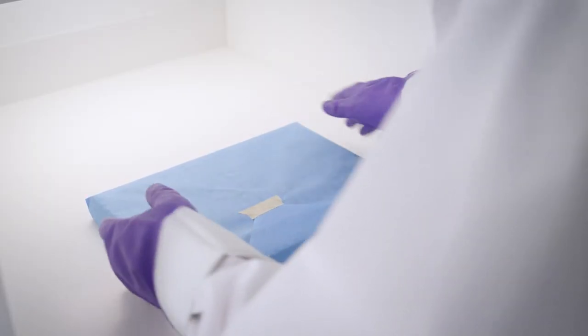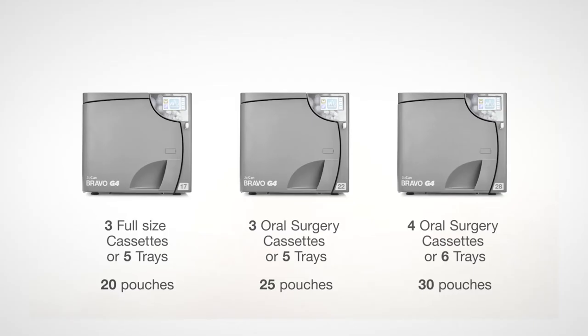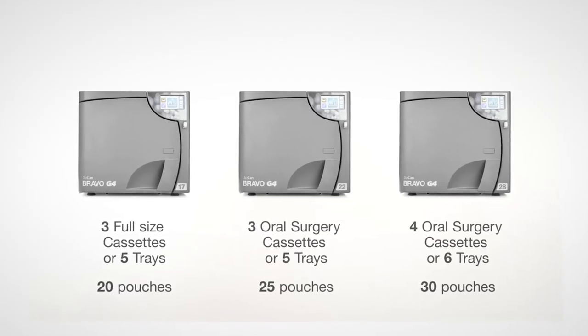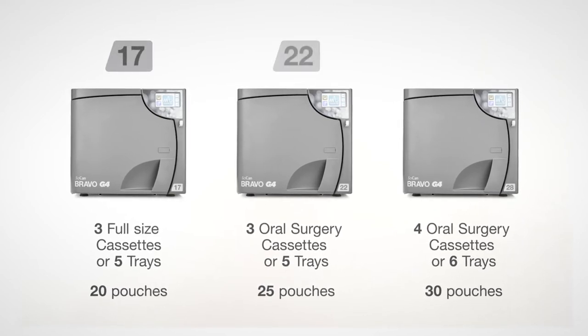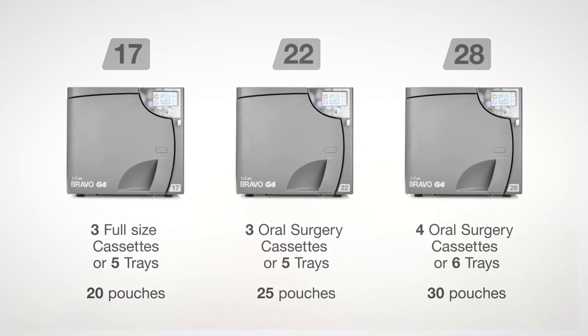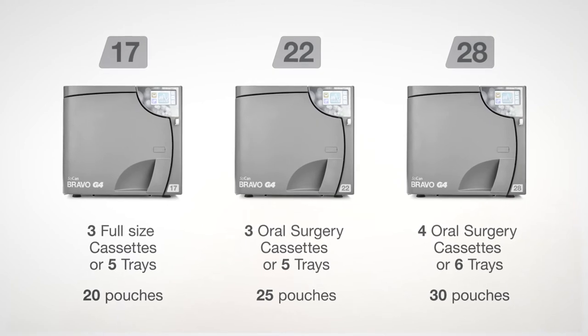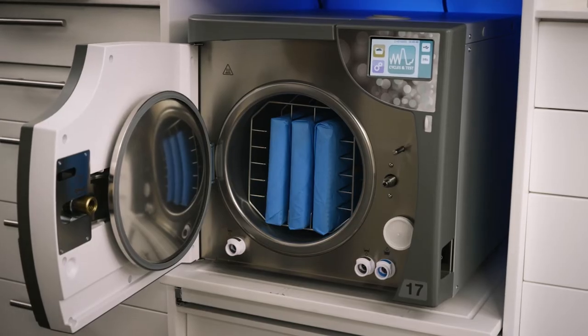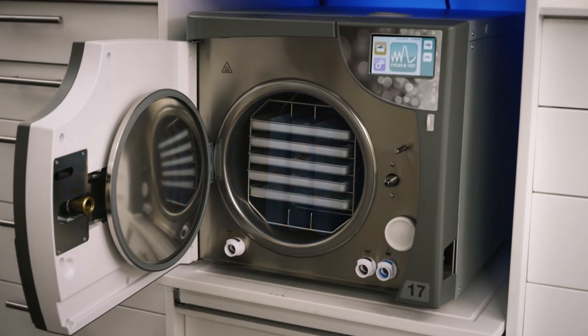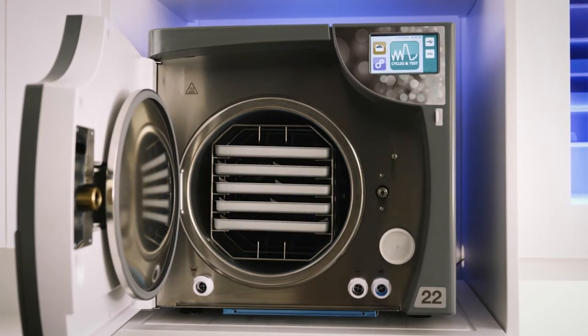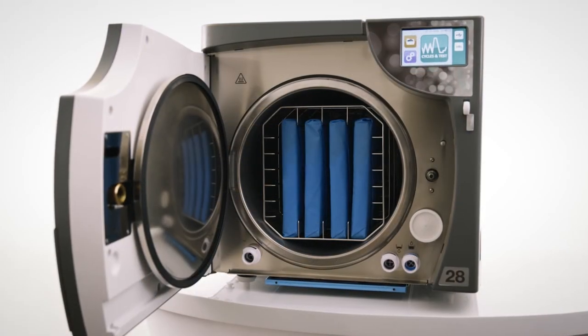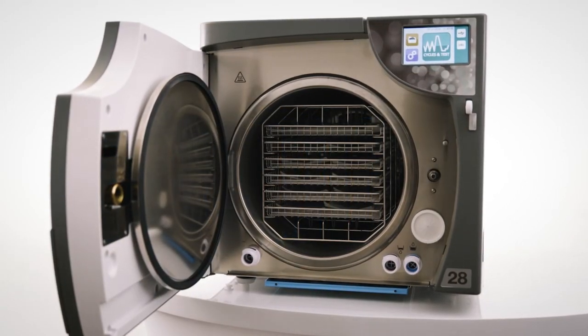The Bravo G4 is available in three chamber sizes: 17L, 22L, and 28L, offering enough capacity to meet the needs of any practice size. The versatile chamber sizes can sterilize up to three cassettes or five trays for the 17 and 22L, or four cassettes or six trays for the 28L.